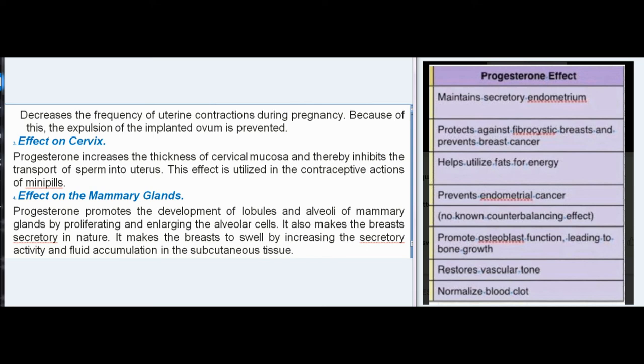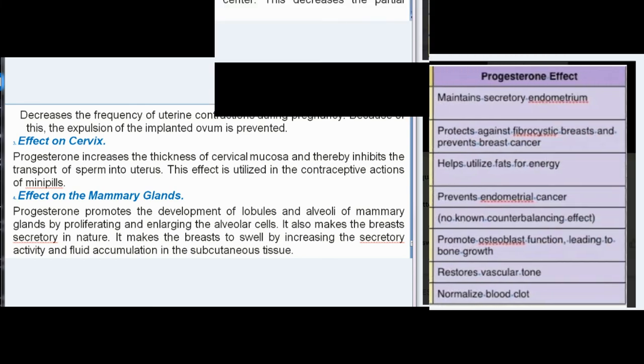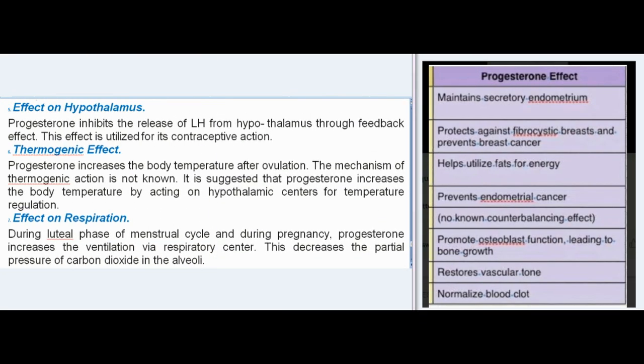Effect on the mammary glands: progesterone promotes the development of lobules and alveoli of mammary glands by proliferating and enlarging the alveolar cells. It also makes the breasts secretory in nature and causes the breasts to swell by increasing secretory activity and fluid accumulation in the subcutaneous tissue. Effect on Hypothalamus: progesterone inhibits the release of LH from the hypothalamus through feedback effect — an effect utilized for its contraceptive action. Thermogenic effect: progesterone increases body temperature after ovulation. The mechanism is not fully known, but it is suggested that progesterone acts on hypothalamic centers for temperature regulation.